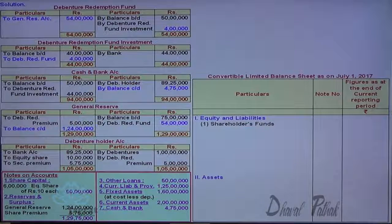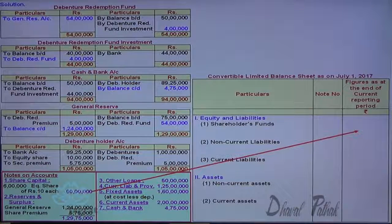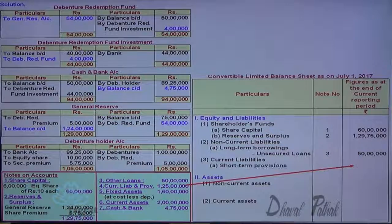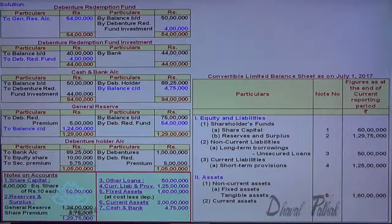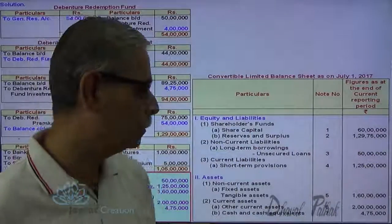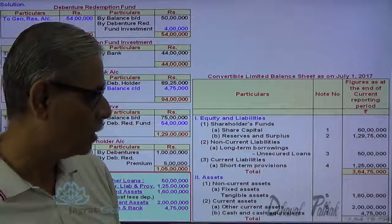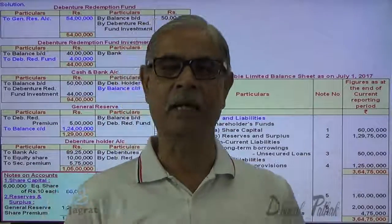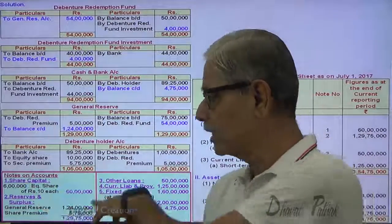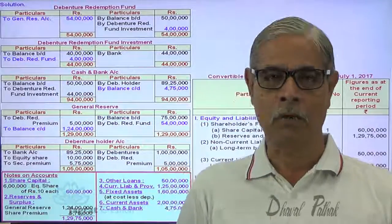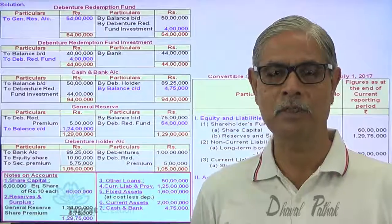So in the balance sheet: equity share capital, reserves and surplus ₹129 lakhs 75 thousand, long-term loans, current liabilities and short-term provisions, fixed assets, current assets, cash and cash equivalents. The total of equity and liabilities matches the total of assets. I have prepared notes on accounts and demonstrated how the journal entries need to be reported. I have tried to explain this sum and I feel that you have followed all these things. Thanks to all.